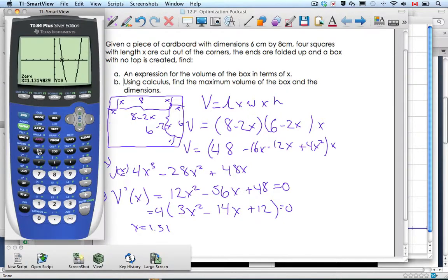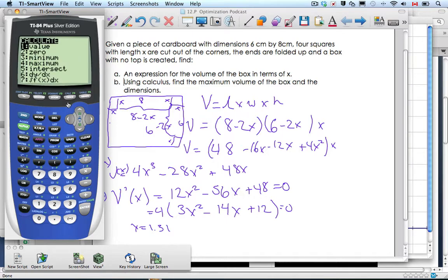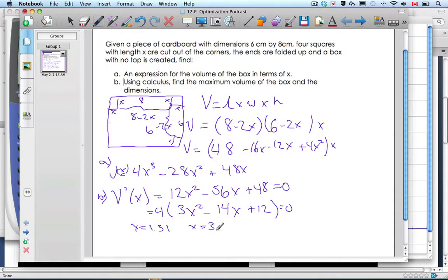Next one, we go second trace, zero, left bound say two, right bound four maybe, and then guess at three. And so the other one is x equals 3.54 I think. So there are x values.